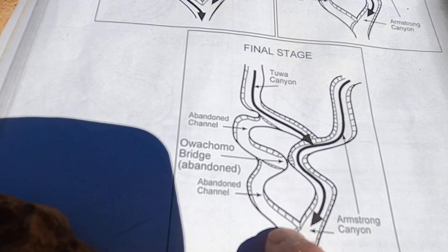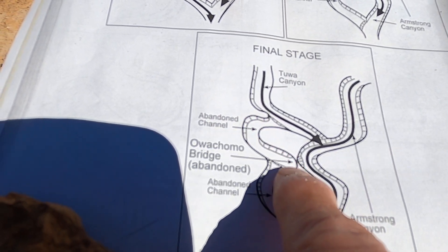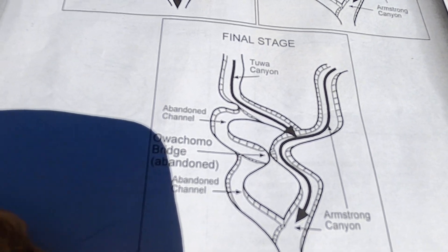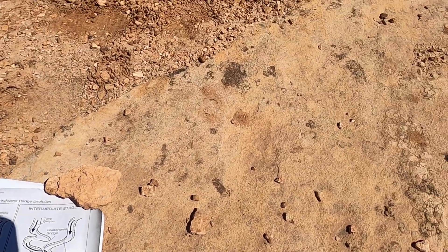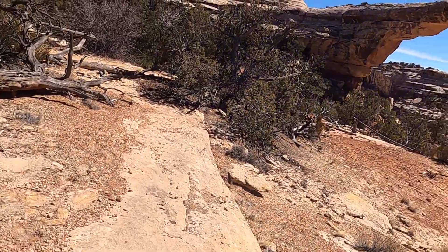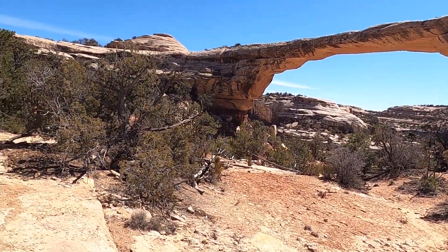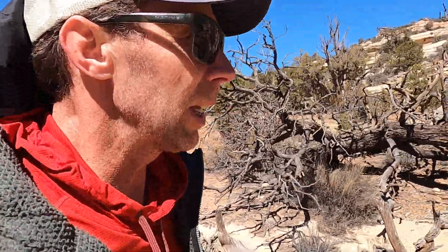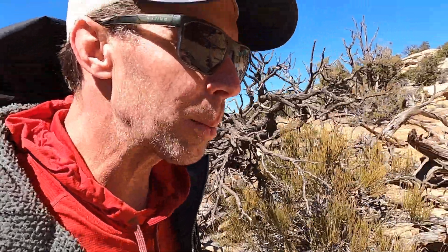What we have here are two abandoned channels — this abandoned channel here, and then the channel that used to have the water flowing through it where the bridge is, which is now abandoned as well. Great little viewpoint here of Owachomo Bridge. We'll wrap this one up by looking at the rocks. These rocks are Permian in age — about 270 million years old. This is what's known as the Cedar Mesa Sandstone.